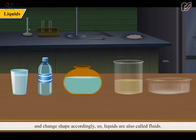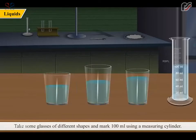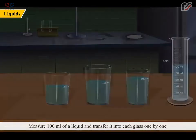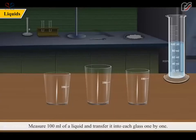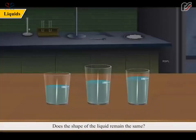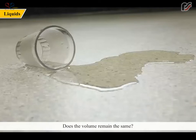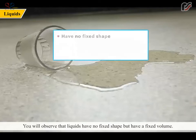Liquids are also called fluids. For better understanding, do the following activity. Take some glasses of different shapes and mark 100 ml using a measuring cylinder. Measure 100 ml of a liquid and transfer it into each glass one by one. Does the shape of the liquid remain the same? What happens when this liquid is spread on the floor? Does the volume remain the same? You will observe that liquids have no fixed shape but have a fixed volume.